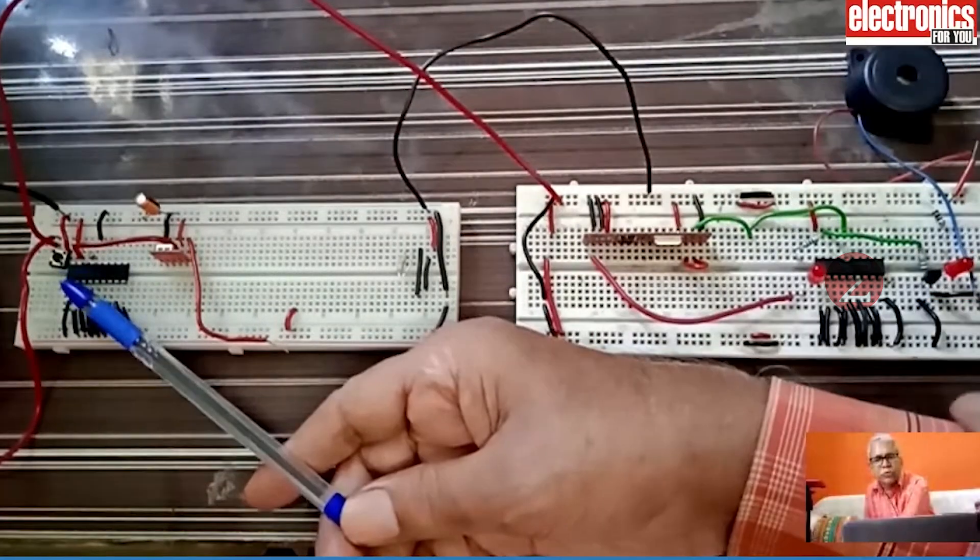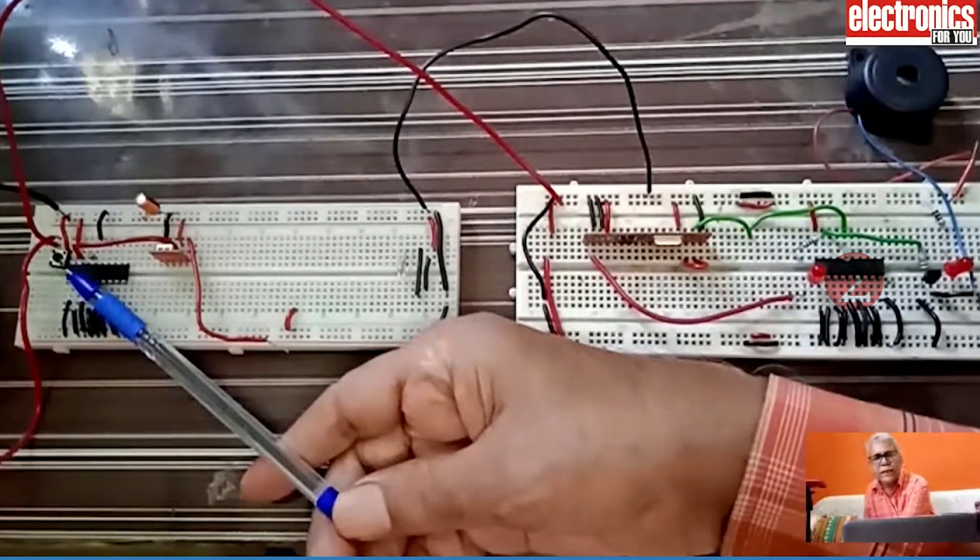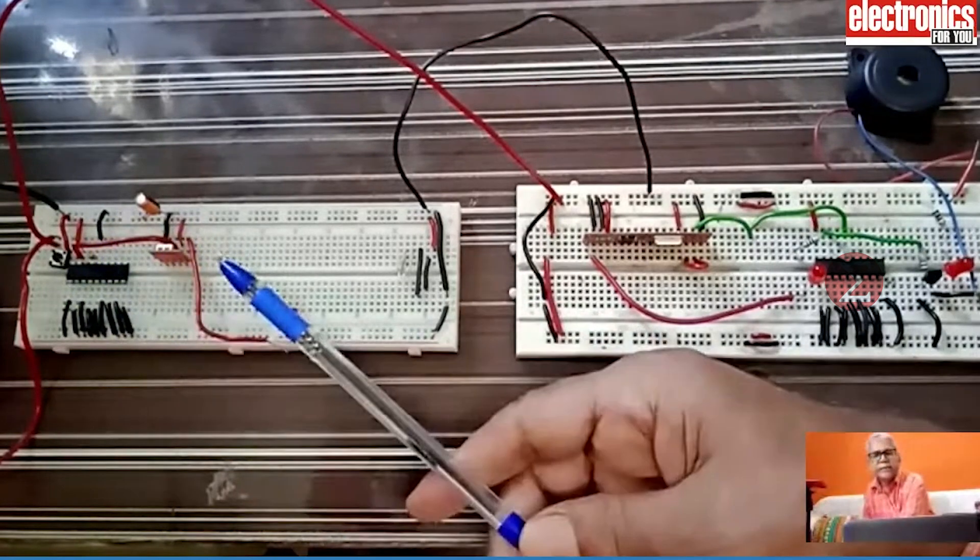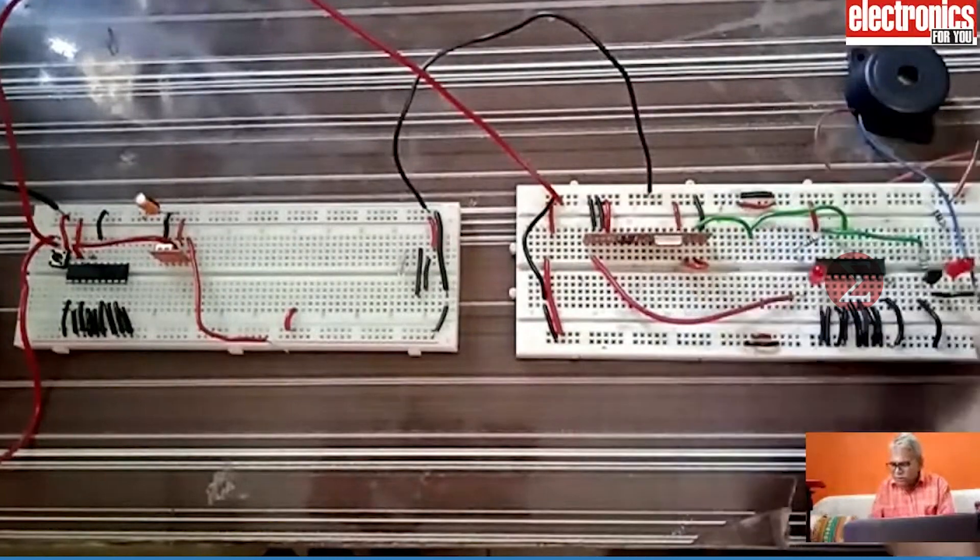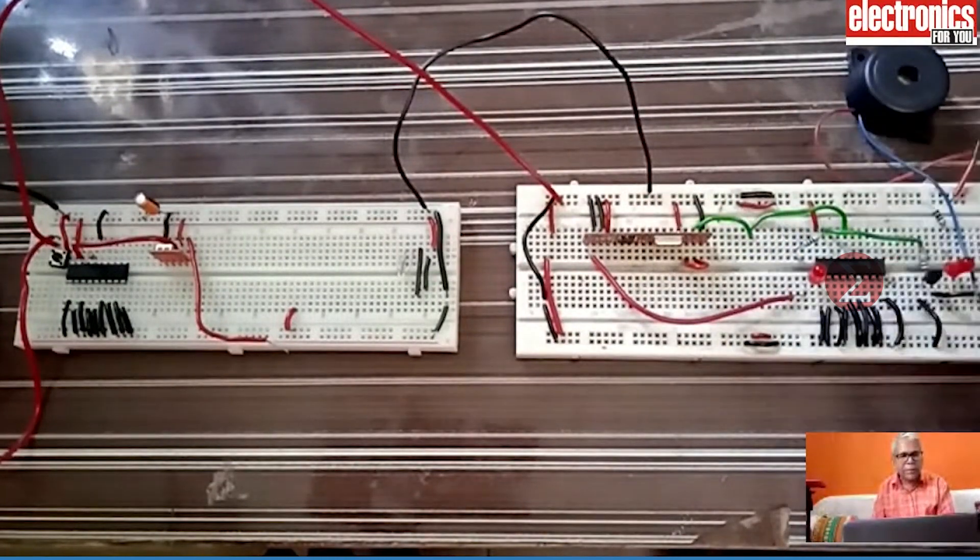This is our full project. As soon as we press this switch at the transmitter end, the signal is transmitted through the RF transmitter, and at the receiver end, it is received by the RF receiver, decoded using decoder IC, and the buzzer blows.